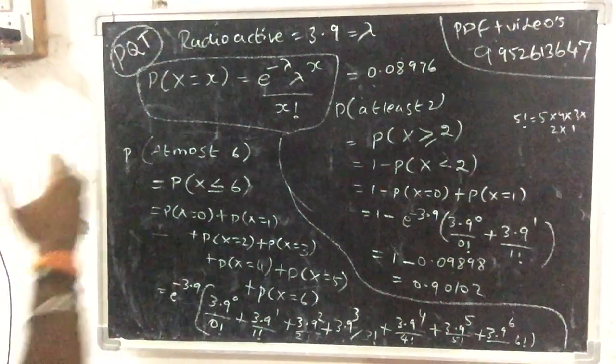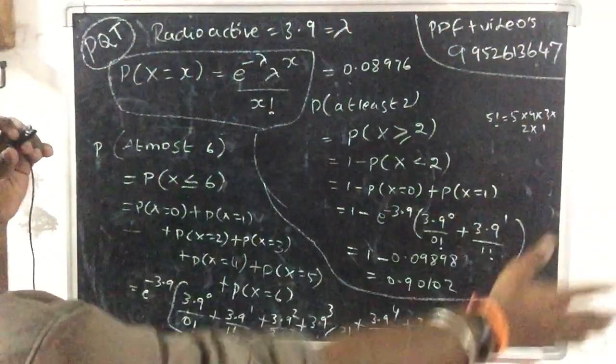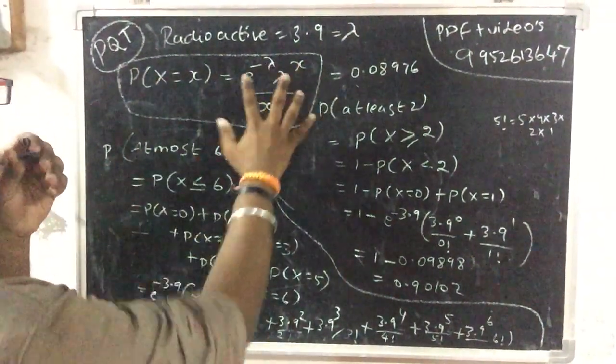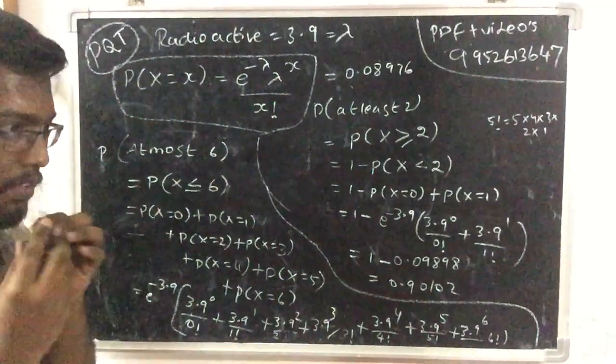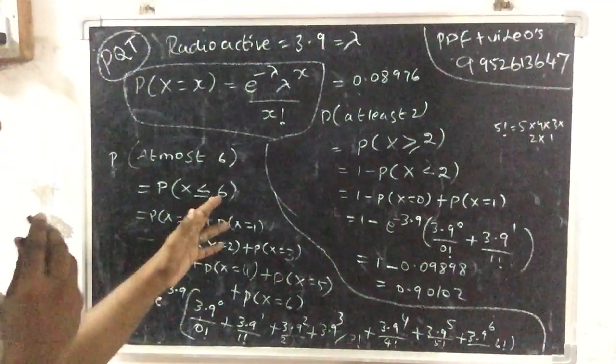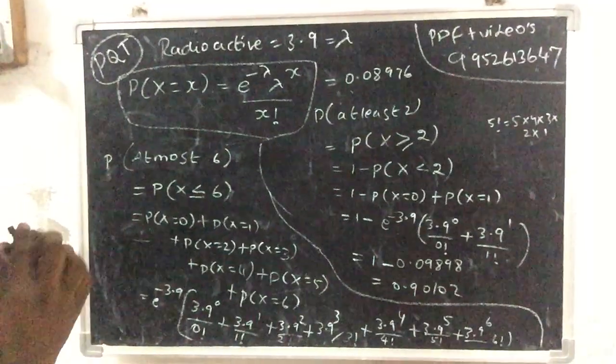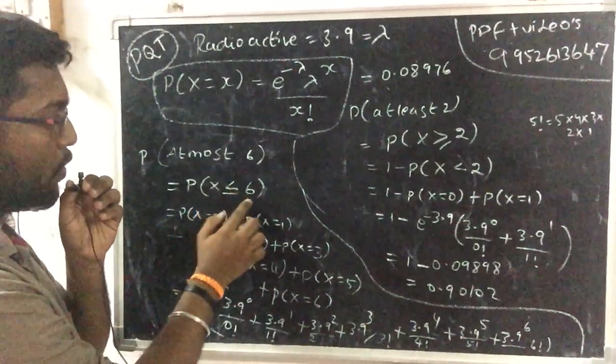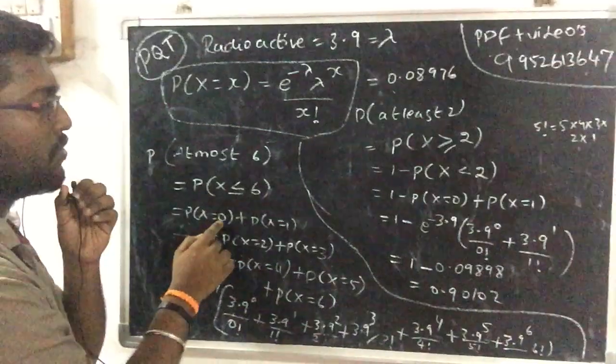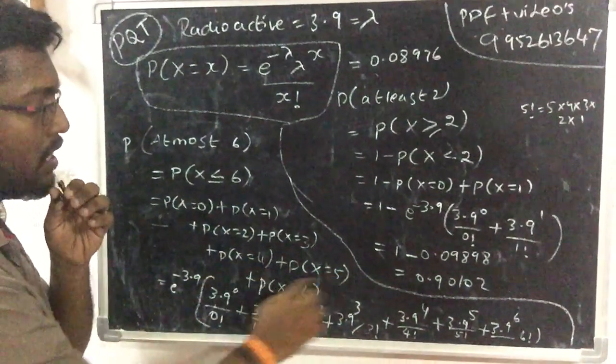The parameter lambda is 3.9. This is a Poisson distribution problem. What is P(at most 6)? This equals P(X ≤ 6), which means P(X=0) + P(X=1) + P(X=2) + P(X=3) + P(X=4) + up to 6. Now applying the Poisson distribution formula.